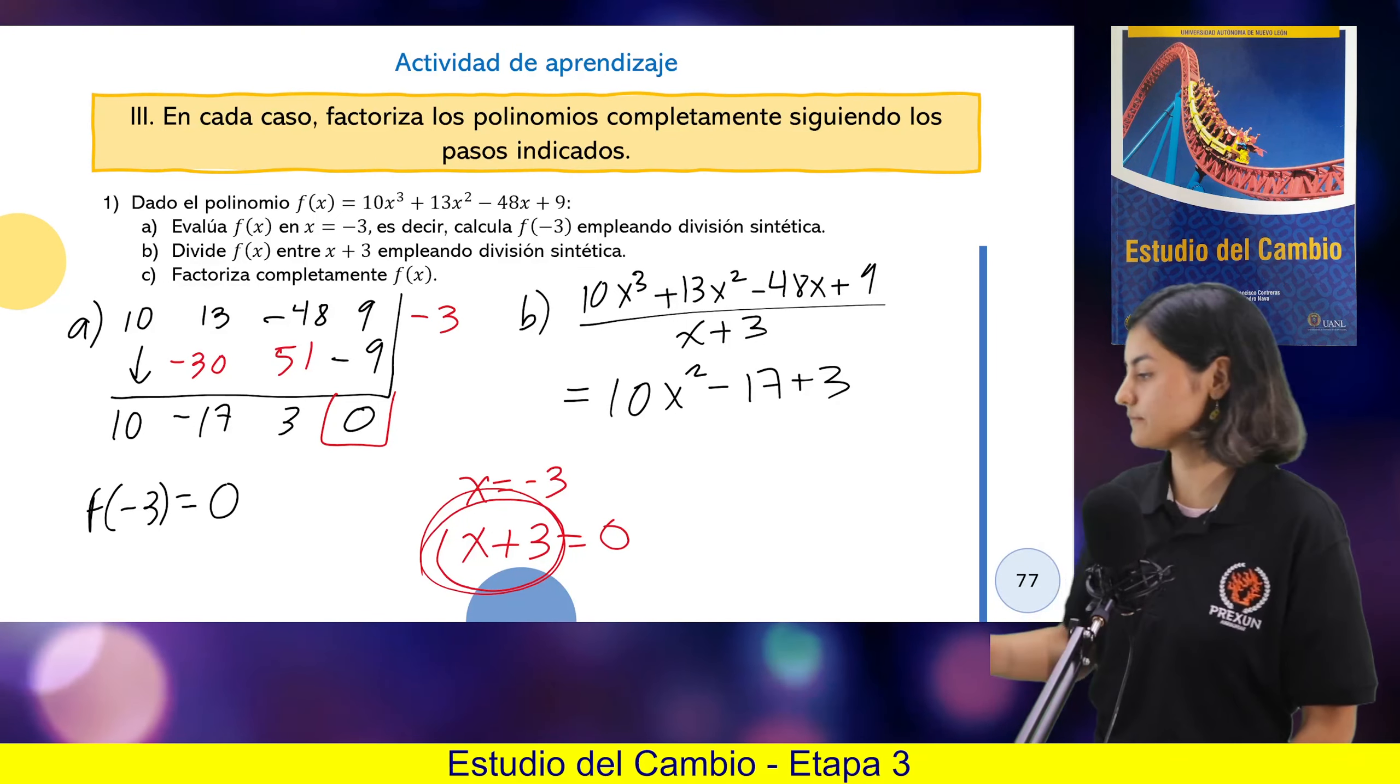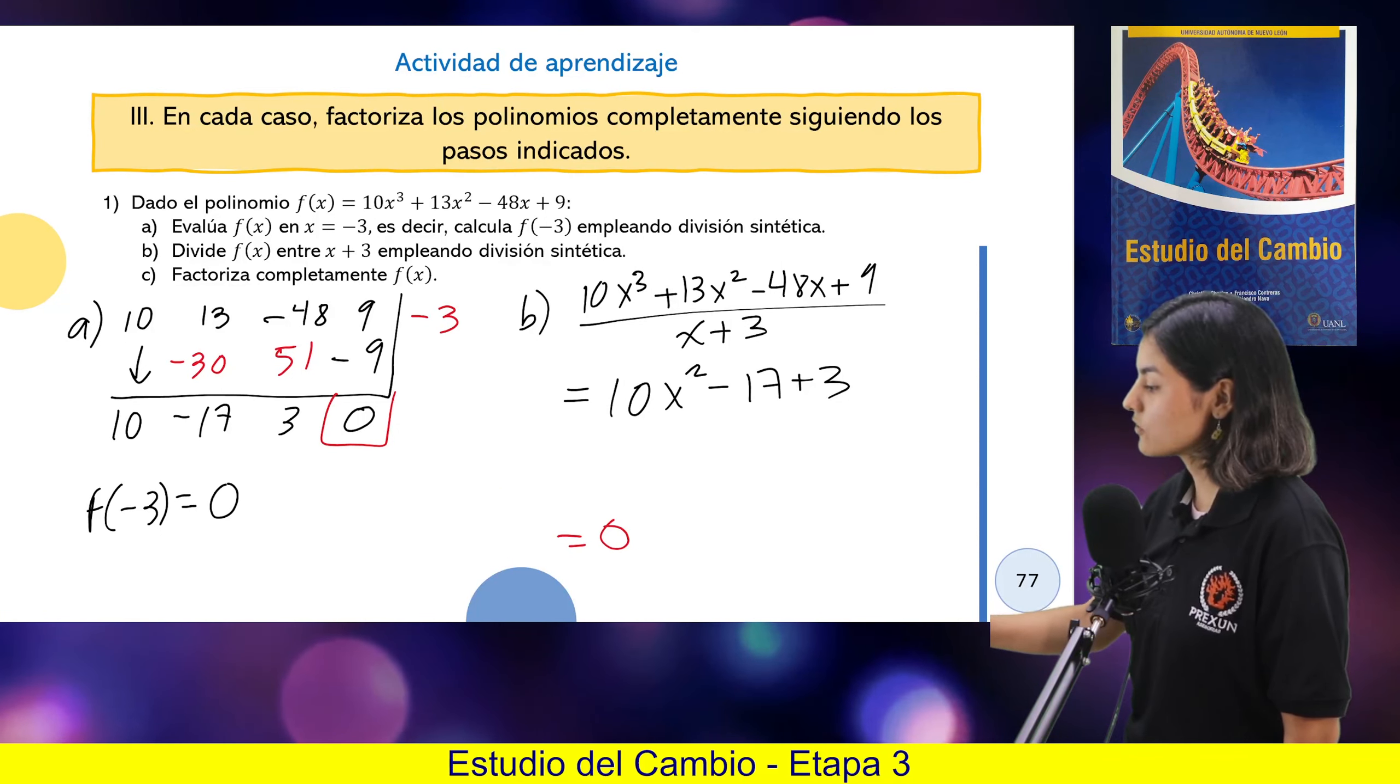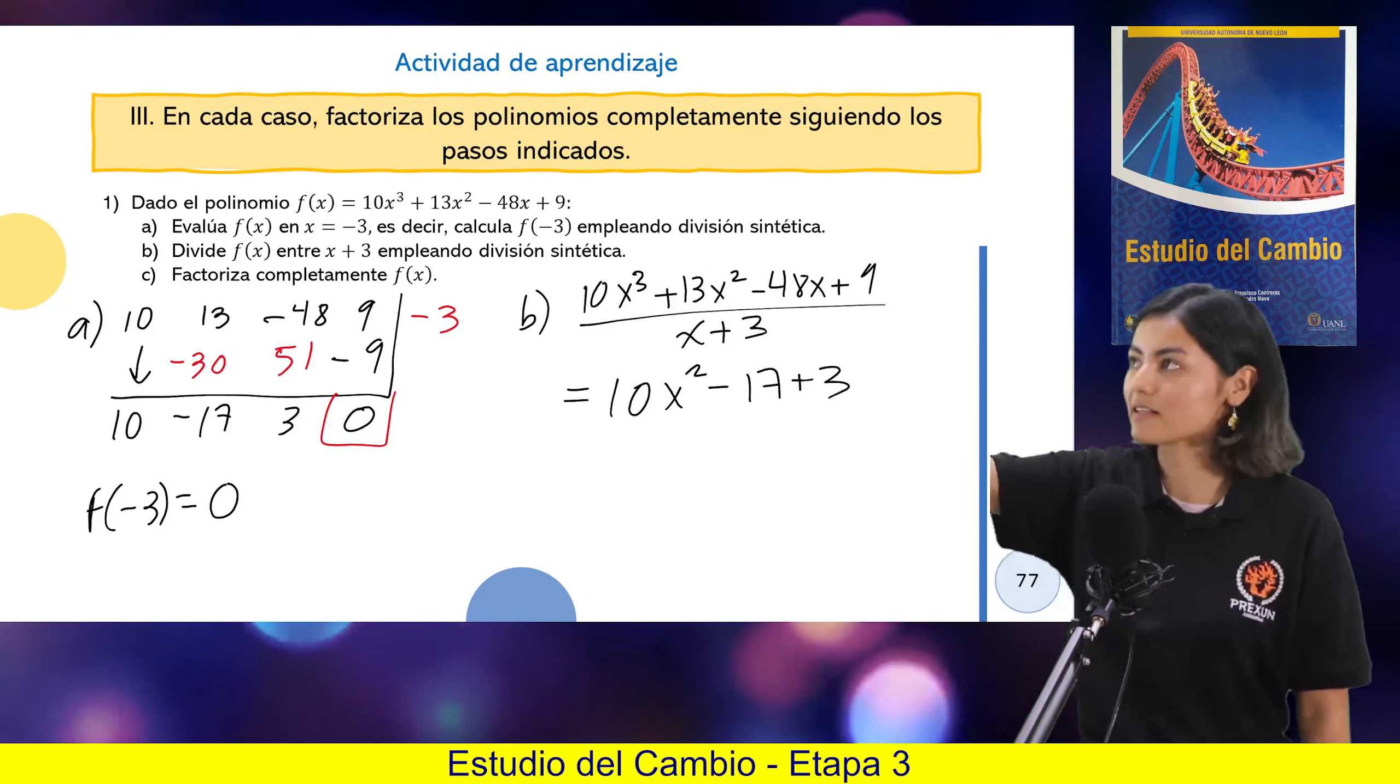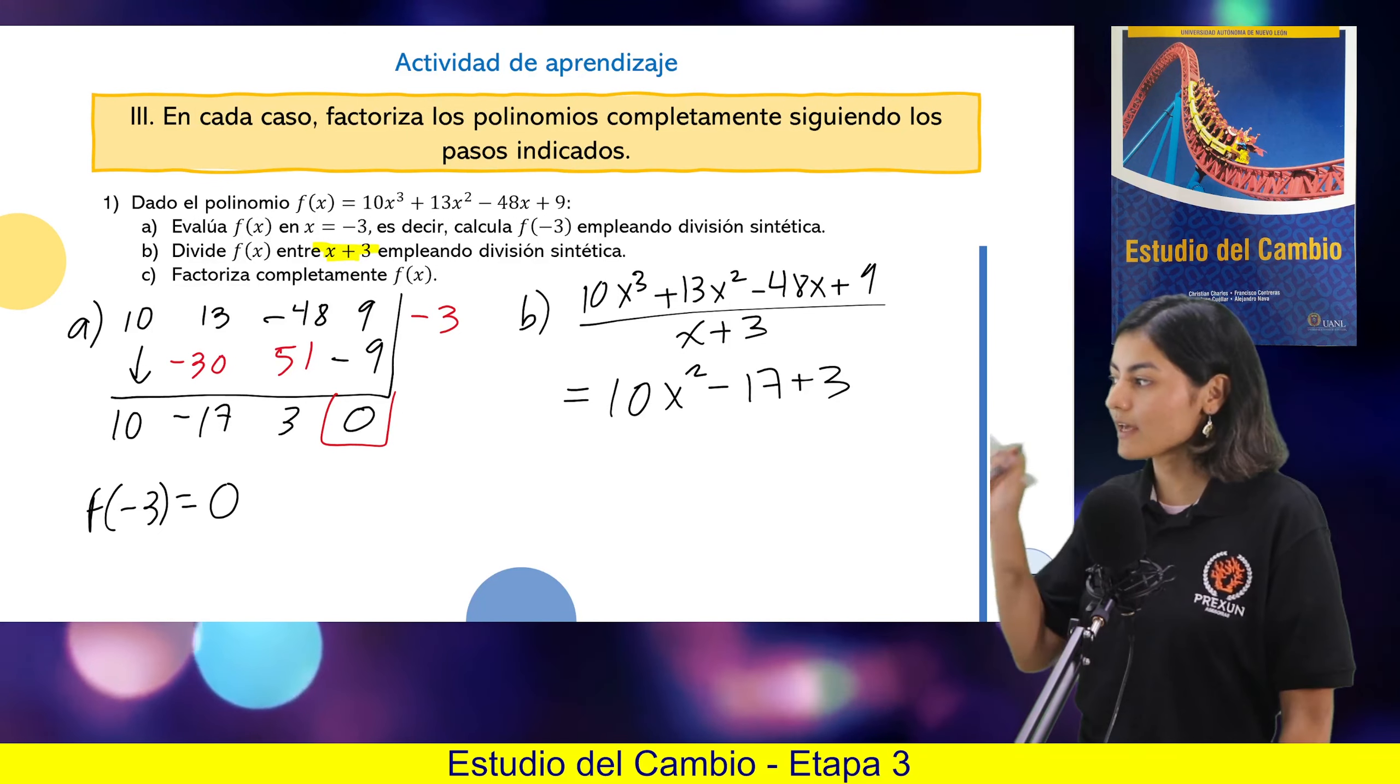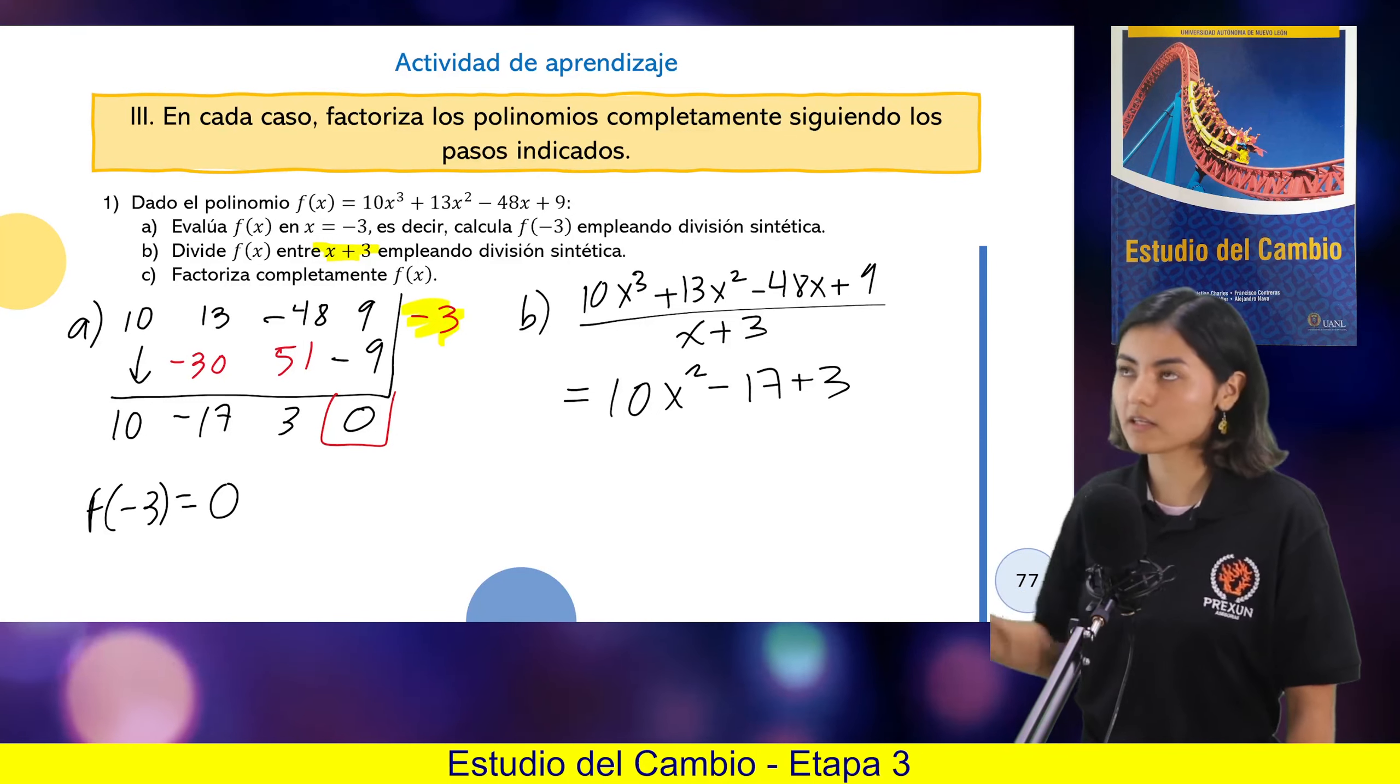Entonces, si se dan cuenta, el siguiente inciso es decir, ¿cuál es la división de mi polinomio entre x más 3? No es casualidad que sea un x más 3, porque x más 3 es el factor para la raíz de menos 3, lo que ahorita les escribí aquí.